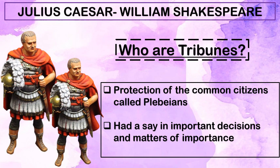You must be wondering: who are the tribunes, or why did I use the word 'tribunes' for Flavius and Marullus? The tribunes were people appointed by the common people of Rome. They had a say in important decisions and matters of importance, and they were there to protect the common citizens, also known as the plebeians.